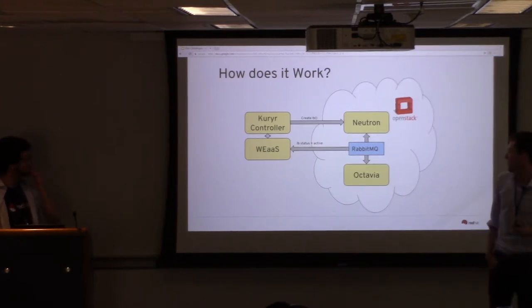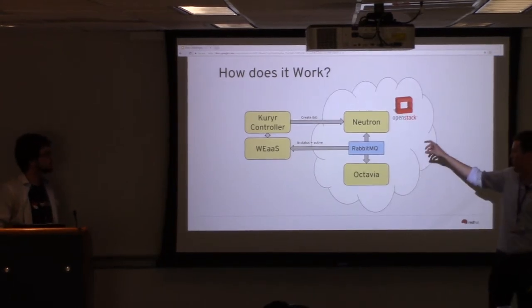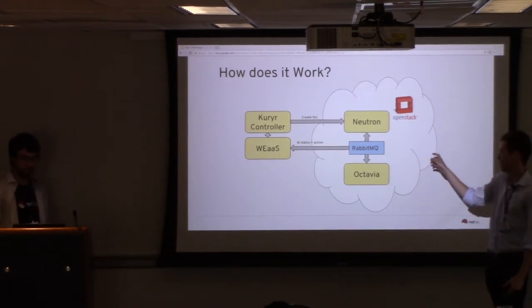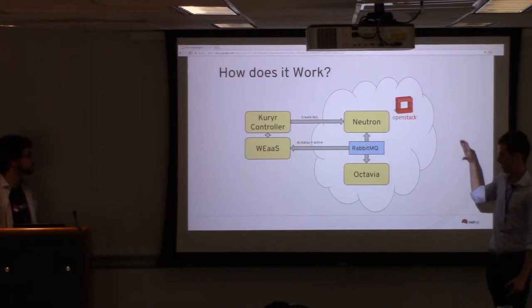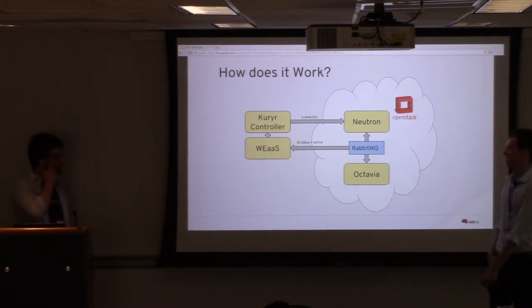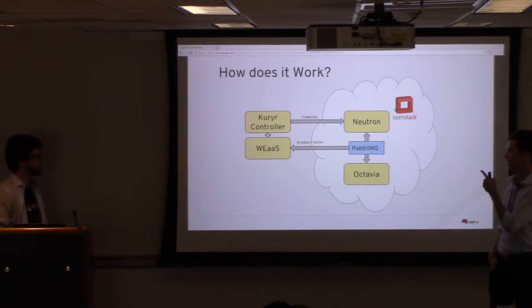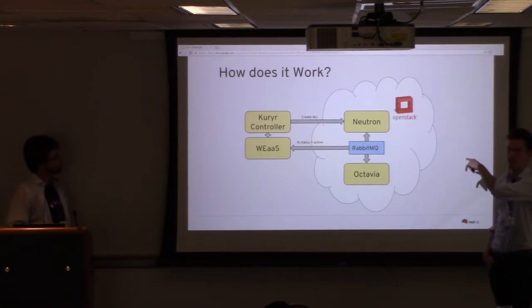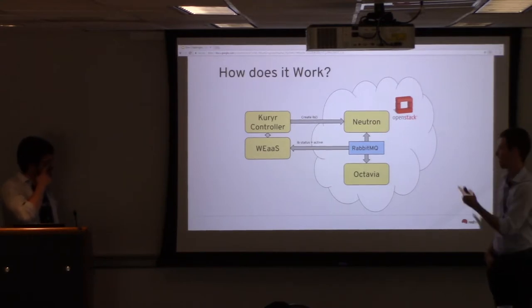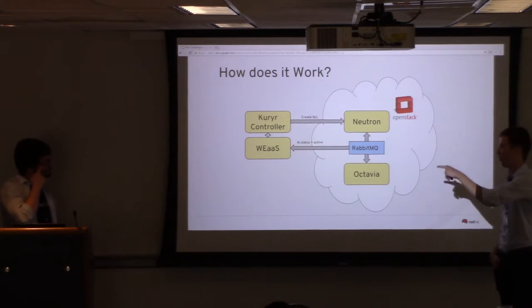Here's an analogy: imagine you're a chef who wants to bake a cake. The current system is like the chef going back to the oven every three seconds until it's preheated. What my tool does is have the oven alert the chef when it's ready. There's a messaging queue between Neutron and Octavia using RabbitMQ. When the Kuryr Controller creates a load balancer and it becomes active, Octavia sends a message to Neutron, and my tool sits and listens to that queue, waiting for that event.